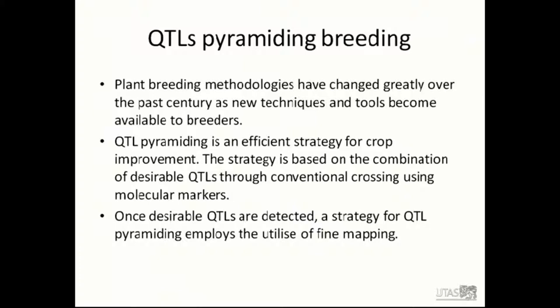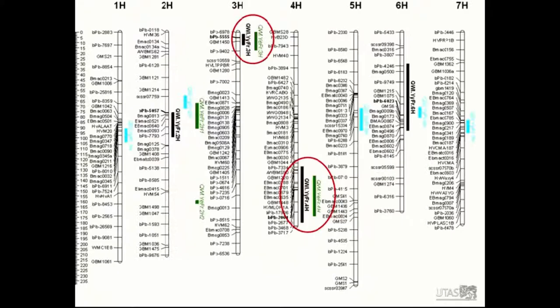Once desirable QTLs are detected, a strategy for QTL pyramiding exploits the use of fine mapping. This graph concerns results from my supervisor's major previous works — mapping of Yerong and Franklin, shown in black and blue — showing quantitative trait loci associated with waterlogging tolerance and salinity tolerance.